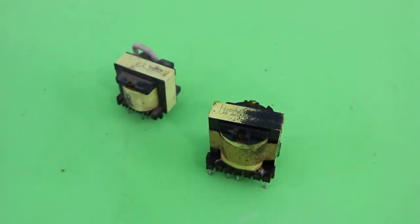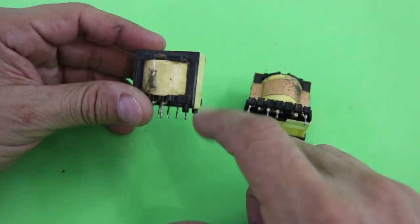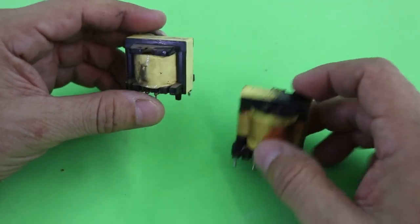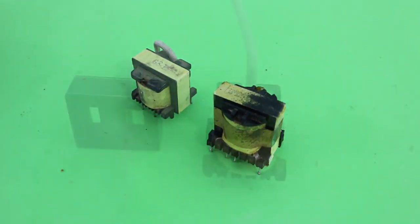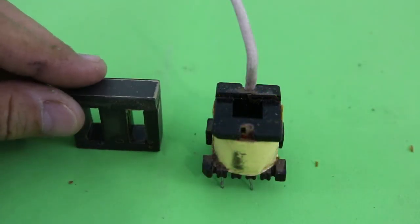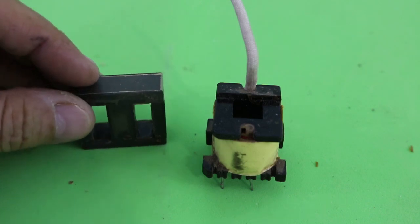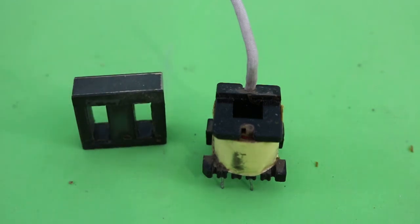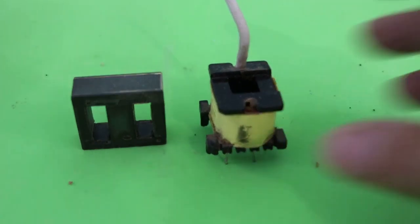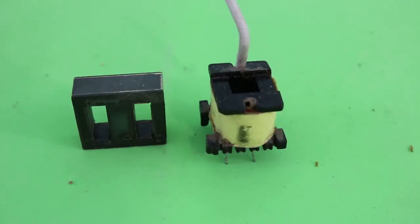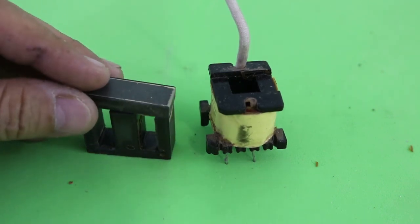If you can't find a flyback, you can also use a high frequency transformer that also has a ferrite core. You can find this in switch mode power supplies. Here you can see the core of the transformer. Sometimes it is very difficult to take them out because of the glue, but a simple hack is to boil them for 10 minutes that will soften the glue, and then you can take them away very easily.